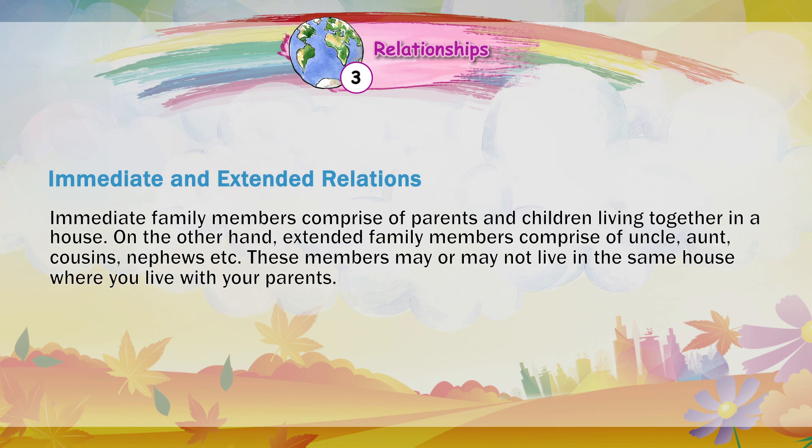Immediate family members comprise of parents and children living together in a house. On the other hand, extended family members comprise of uncle, aunt, cousins, nephews, etc. These members may or may not live in the same house where you live with your parents.